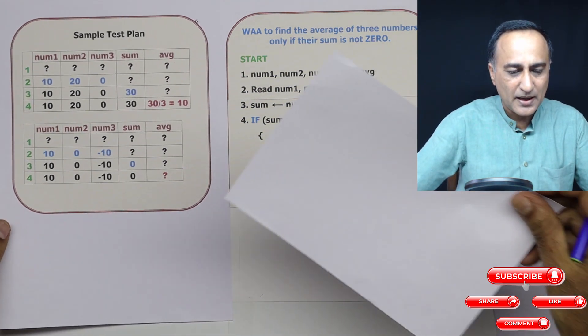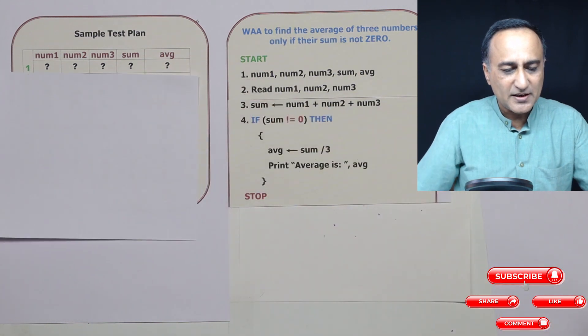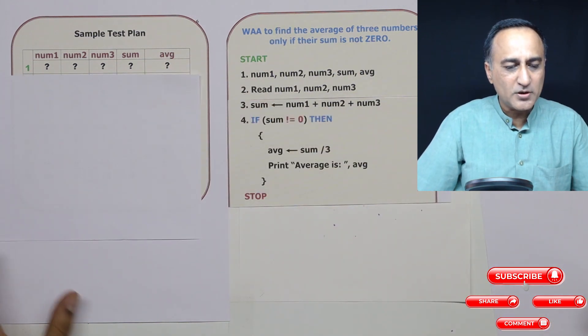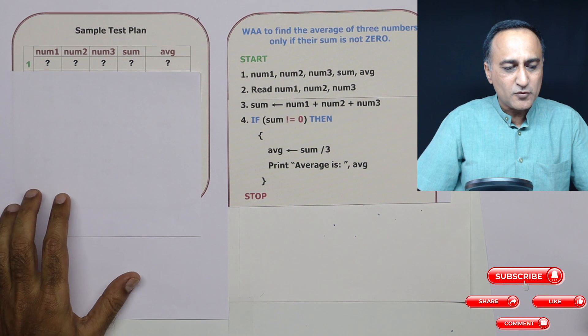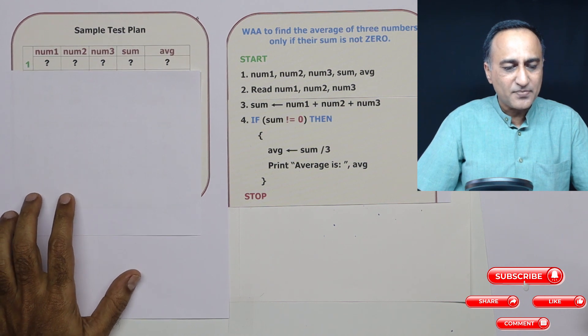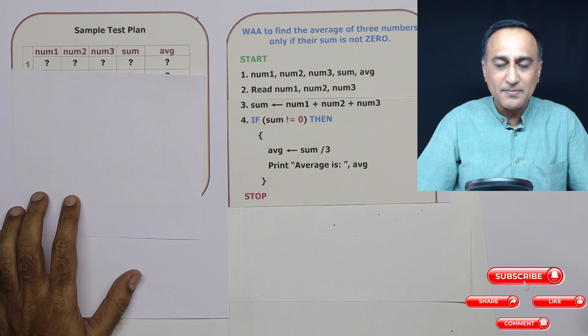In the first test plan, I've shown you how to do the test plan here. If you see here, I have defined three variables num1, num2, num3, and then I have sum and average.